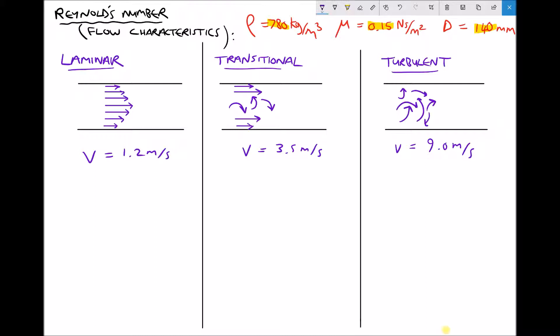We're going to be discussing three different types of flow. Moving from left to right we're going to discuss laminar flow, transitional flow, and turbulent flow. We're also going to look at how the Reynolds number can be used to determine what type of flow we have in that pipe.